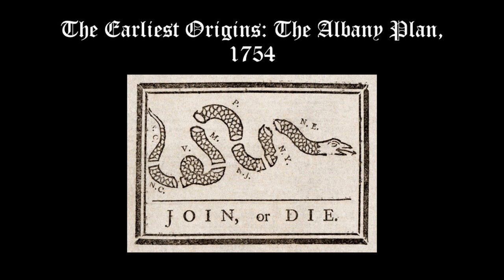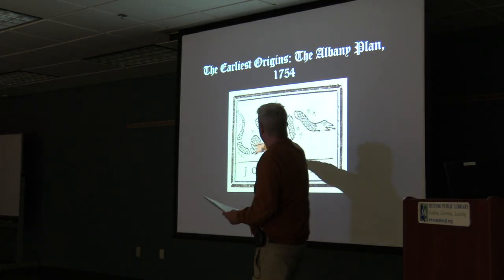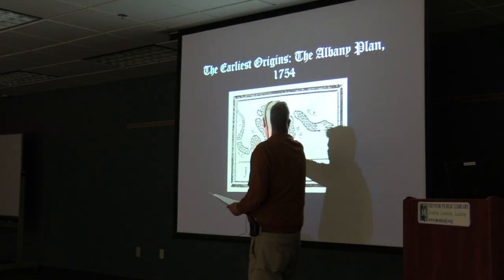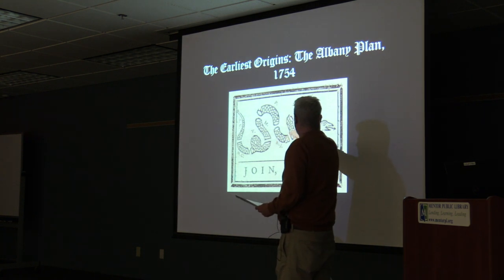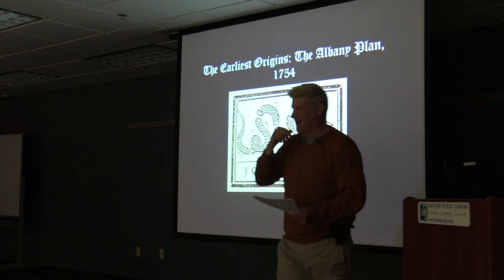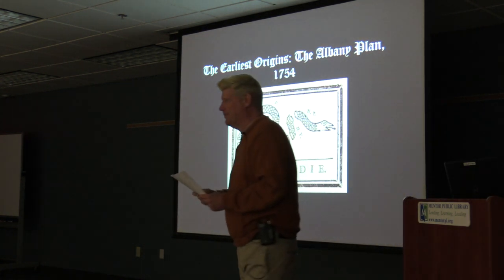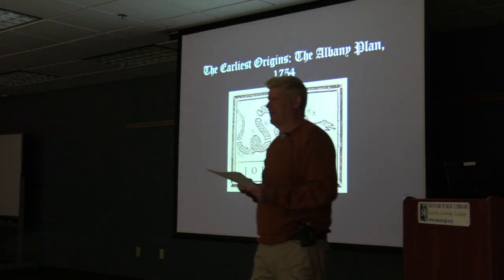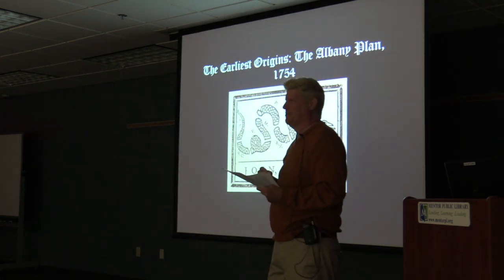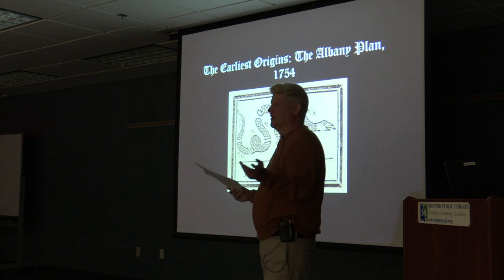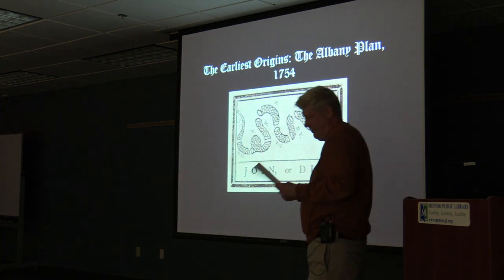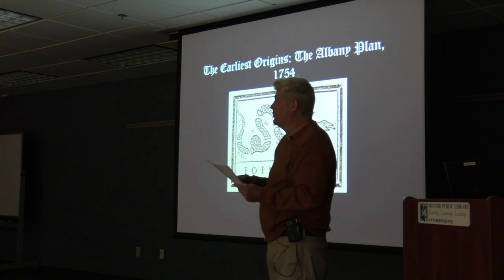You can see in the cartoon: South Carolina, North Carolina, Virginia, Maryland, Pennsylvania, New Jersey, New York, and New England — they didn't bother to break New England down. New England was often referred to as the Eastern colonies, which doesn't seem that much further east, but when you're all along the Atlantic seaboard it seems more realistic.